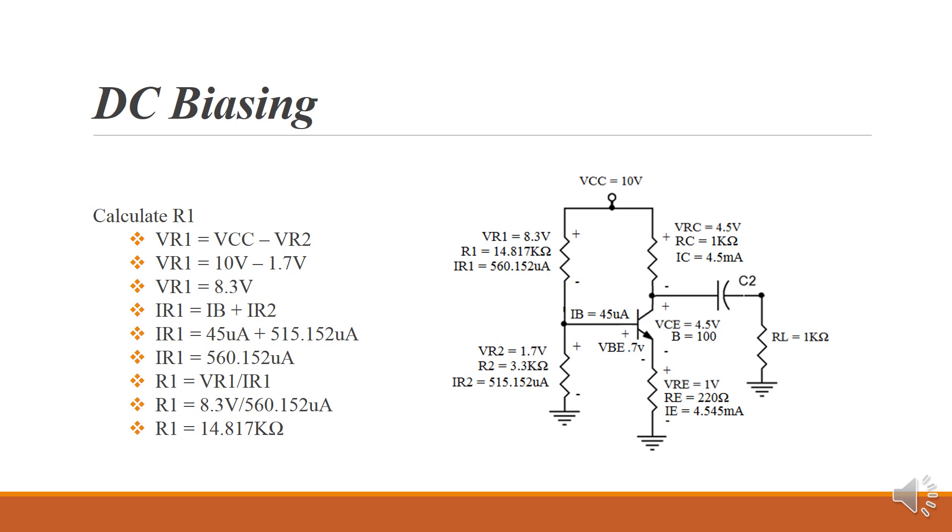Now, R1. This is really just an exercise of Kirchhoff's current laws and Kirchhoff's voltage laws. So we can Kirchhoff this and find that VR1 is equal to VCC minus VR2. It gives us 10 volts minus 1.7 volts, which gives us a VR1 of 8.3 volts.